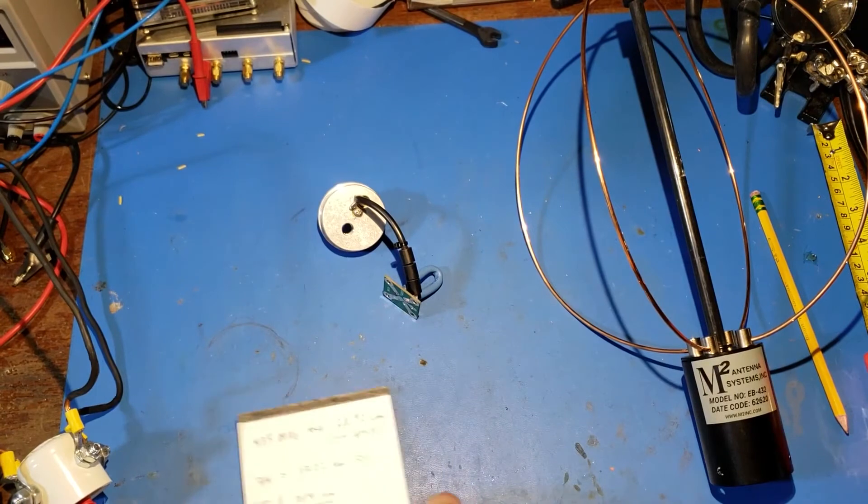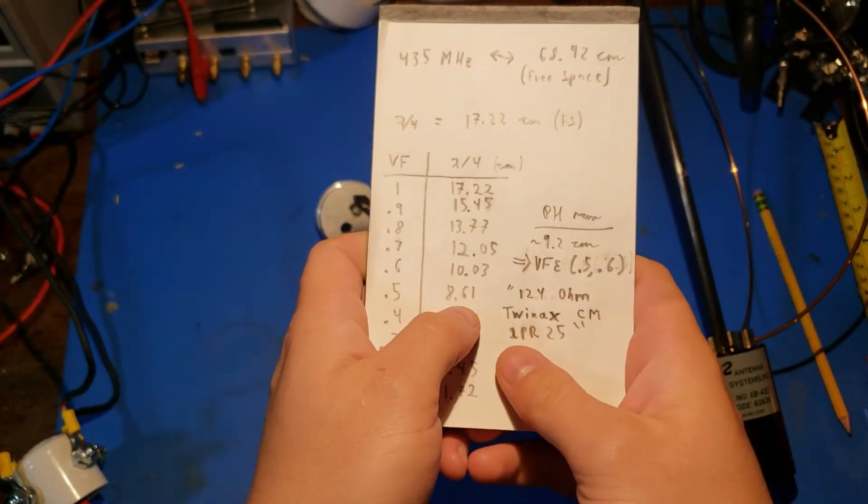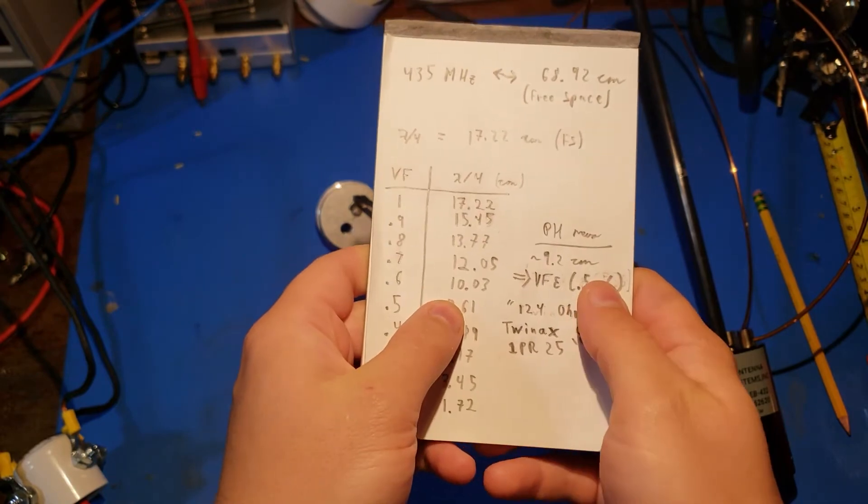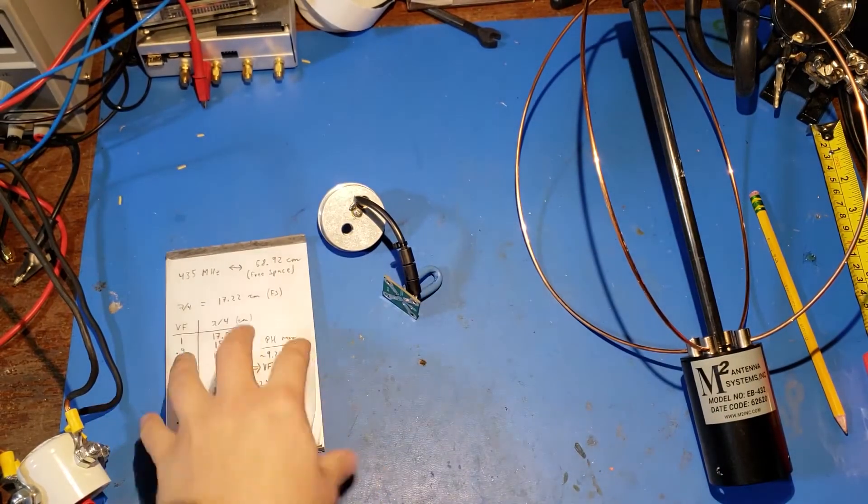So, looking at my handy-dandy chart here, we see that the velocity factor of the twin-ax has to be like 0.55, somewhere between 0.5 and 0.6 here, which I think is pretty interesting.